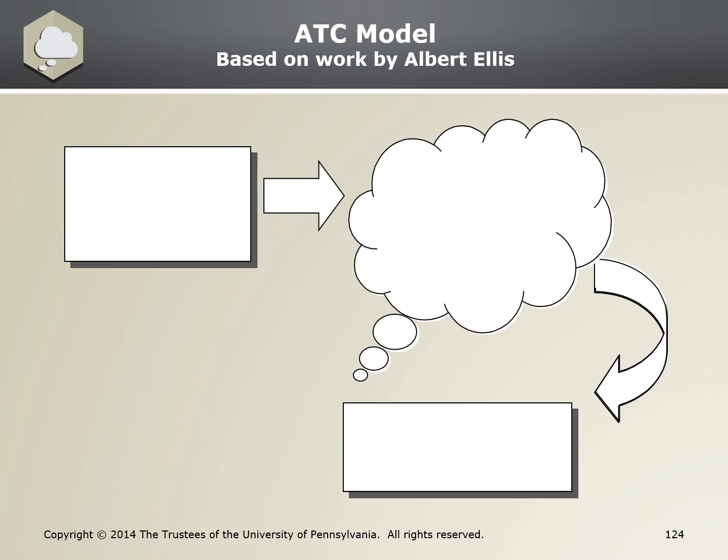Now we're going to talk about the ATC model based on work by Albert Ellis. First, we have the activating event. The keyword is trigger. It's a challenge, adversity, or even a positive event. The activating event is the who, what, when, and where. It can be a large adversity such as the death of someone you care about, or a minor issue like a parking ticket. Activating events can be positive as well, such as getting a promotion or having a baby.